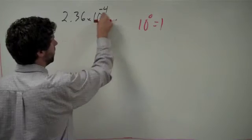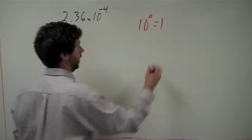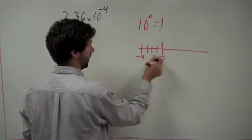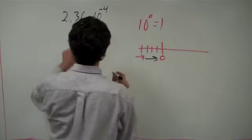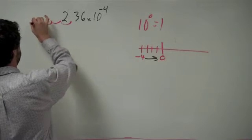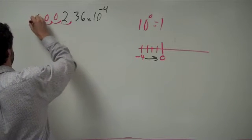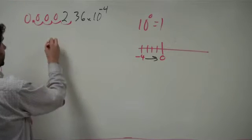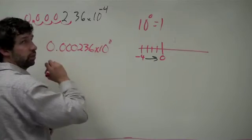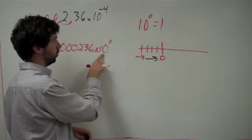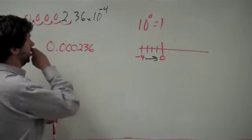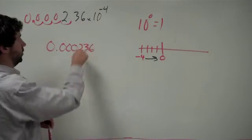So I want to get from negative 4 to 0. On a number line, here's negative 4, here's 0. To get from negative 4 to 0 I need to move to the right. Therefore the decimal needs to move 4 places to the left. So I move it 1, 2, 3, 4 places, add zeros, and I end up with 0.000236 times 10 to the 0. But 10 to the 0 is just equal to 1, so we can just drop this.